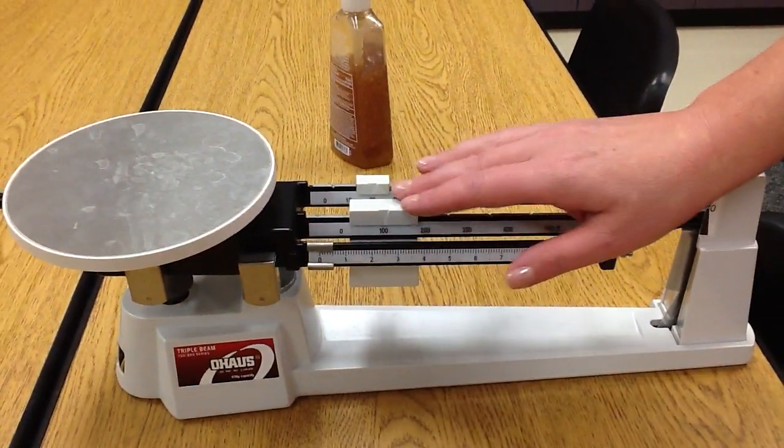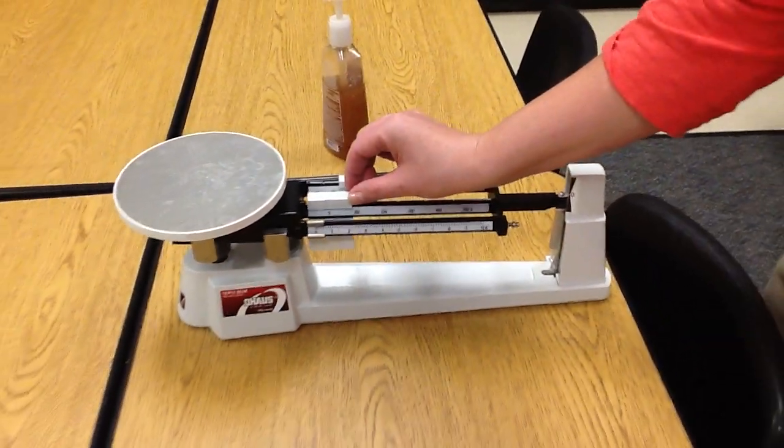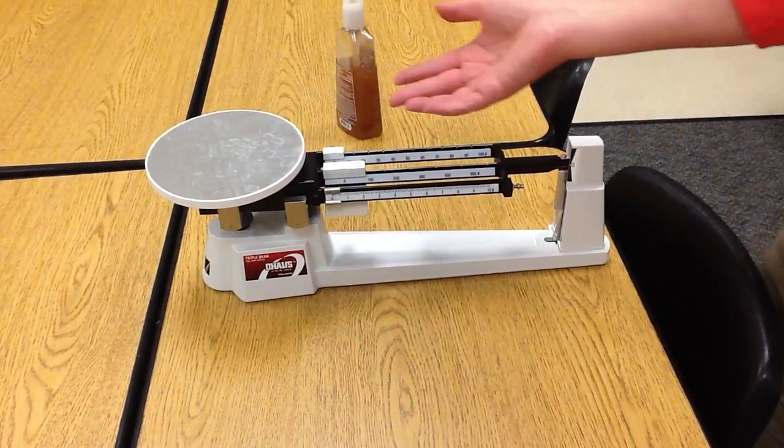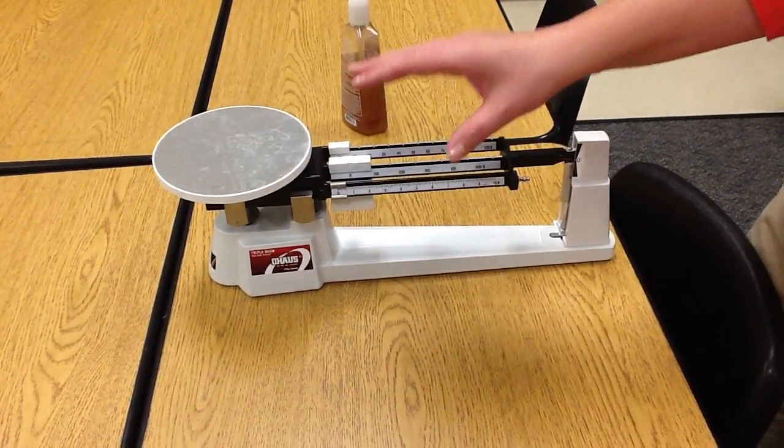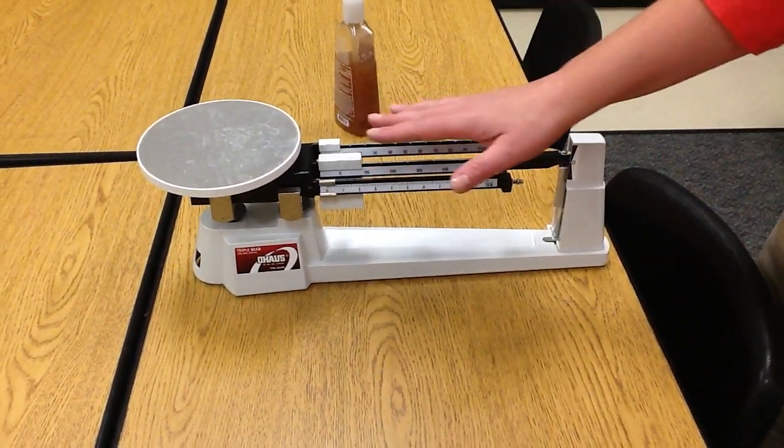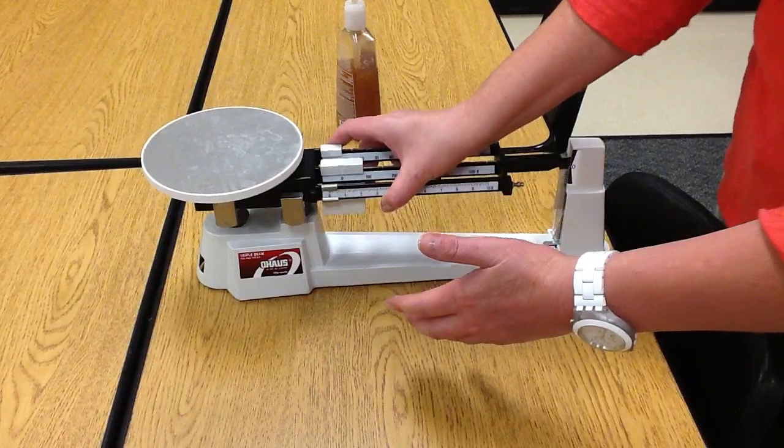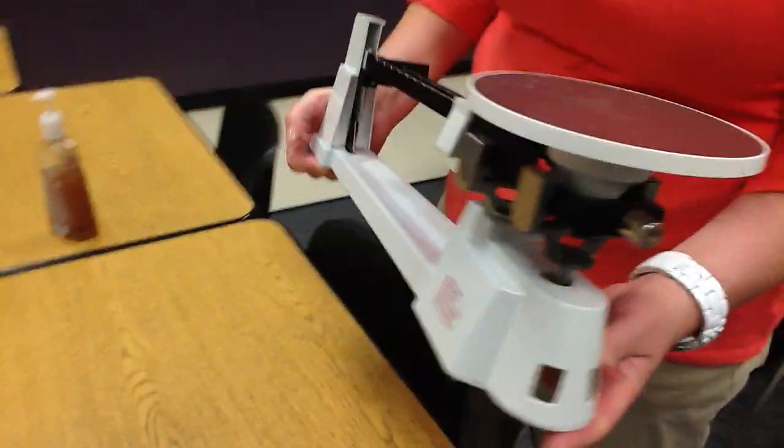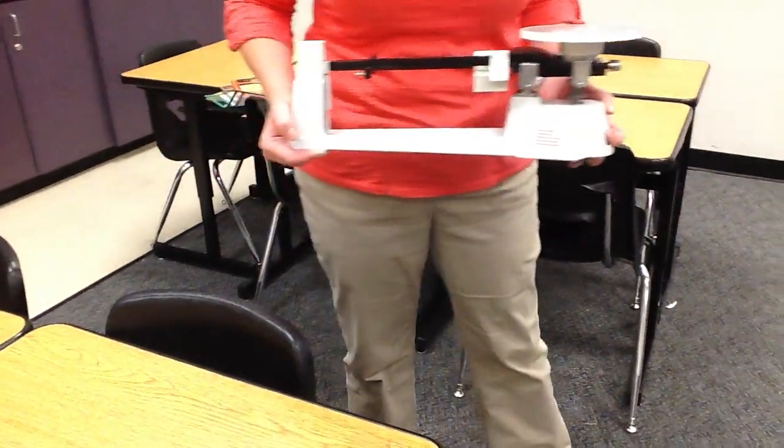So what we need to do is we are going to, first before we do measure, we are going to practice carrying the triple beam balance, which is very important. You need to make sure that it is level at all times. So when you lift it up, you're going to hold two hands just like this and you're going to walk with it, if you need to walk with it.